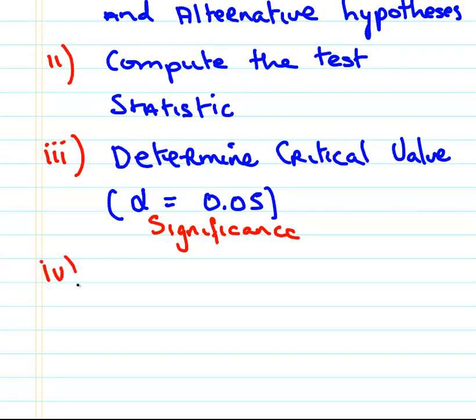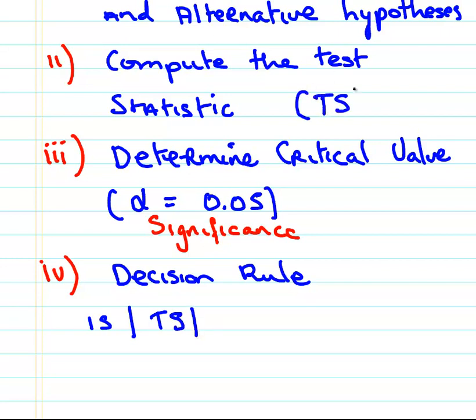The next part I'm going to look at here is finally the decision rule. Now I'm going to use a decision rule that applies across all types of hypothesis test. Is the absolute value of the test statistic, which is TS there, greater than the critical value.